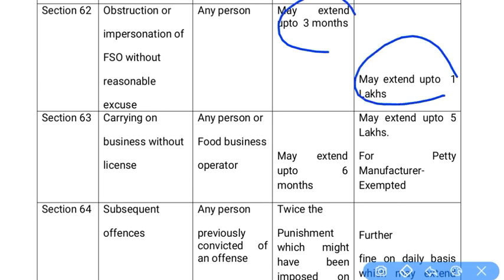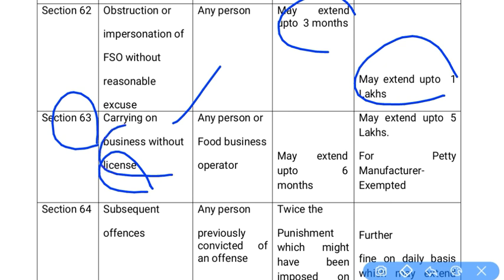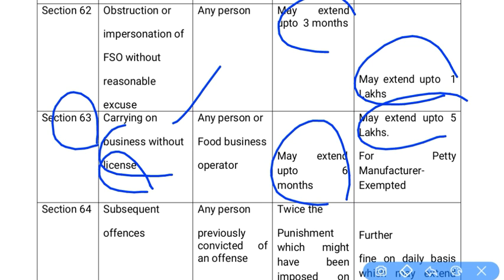Section 63 covers carrying on a food business without a license. Any person or food business operator doing business without a license can face 6 months of imprisonment or a fine of ₹5 lakhs. Small or exempt food business manufacturers may be exempted.